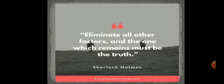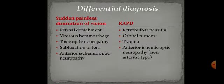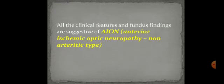Eliminate all other factors and the one which remains must be the truth. As all other conditions are ruled out, the remaining diagnosis is anterior ischemic optic neuropathy. Based on the clinical features, fundus findings, and ruling out of differential diagnoses, our probable diagnosis is anterior ischemic optic neuropathy of non-arthritic type.